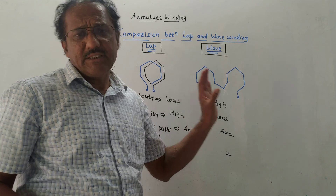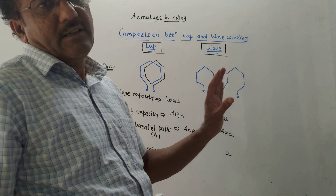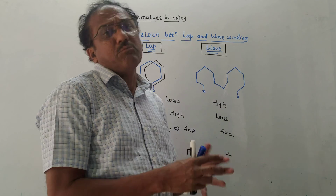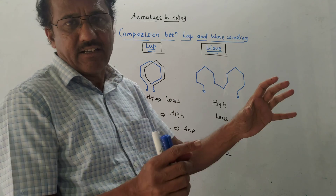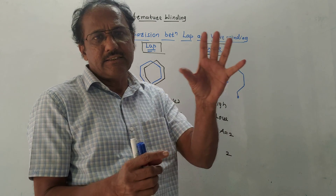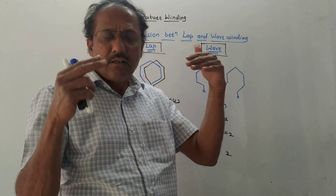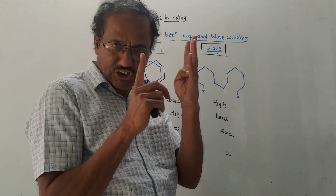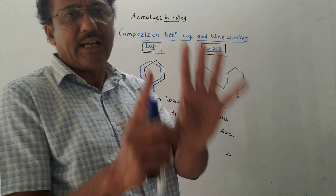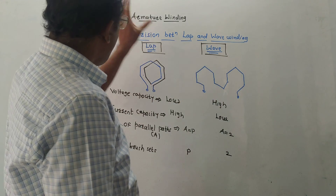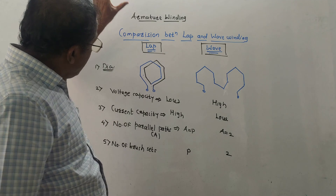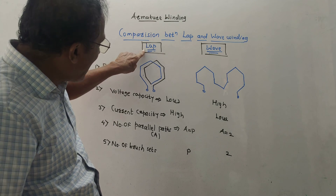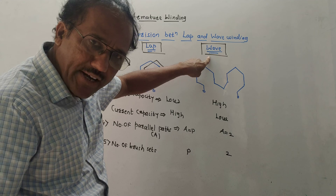As far as DC machines are concerned, there are two major parts in DC motors. One is stator and another is the rotational part known as the armature. Stator, as the name indicates, is the stationary part. Armature is the rotating part. There are two types of armature windings: one is lap winding and another is wave winding.